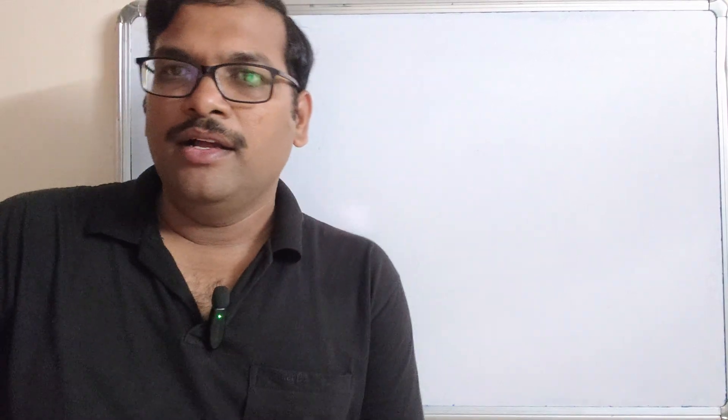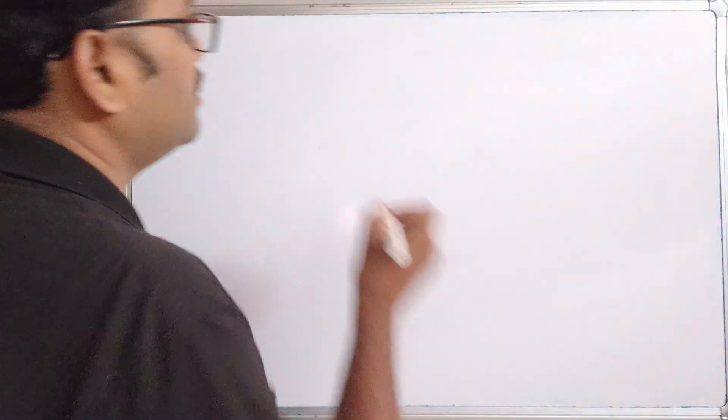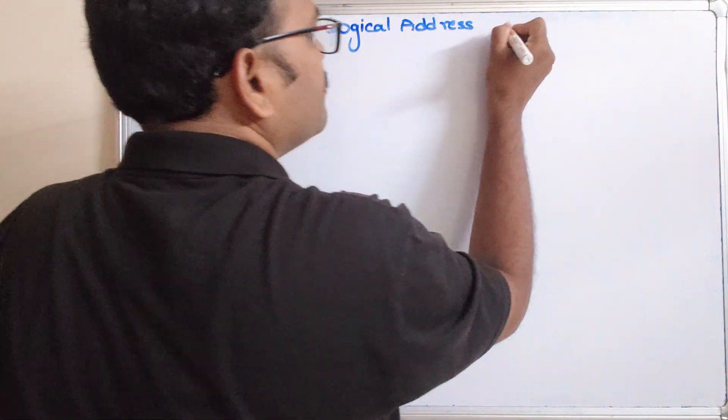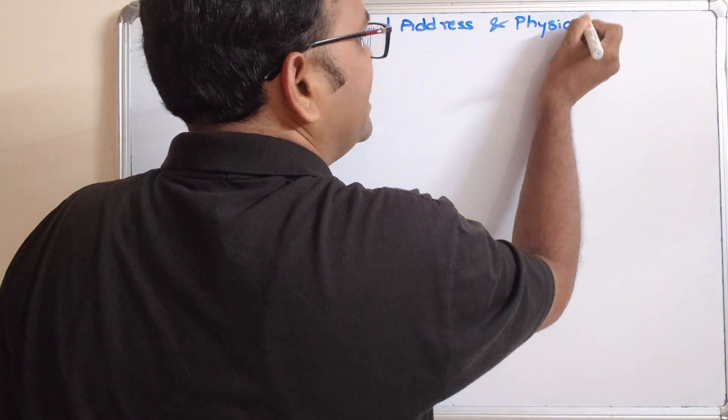Hello friends, welcome back to our channel. In today's session we'll see one more concept in operating systems — the difference between a logical address and a physical address. In our previous session we saw the introduction to memory management, where we covered different categories of memories with respect to cost, size, and access time: main memory, cache memory, registers, and secondary memory.